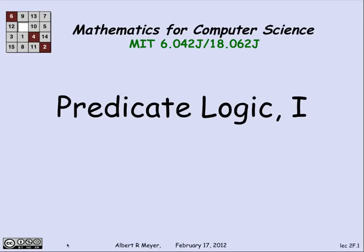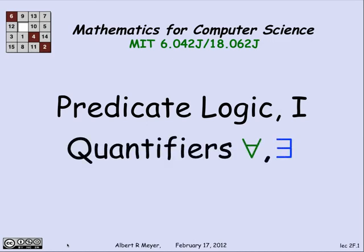The logic of predicates is a basic concept in mathematical language, as well as being a topic on its own. In particular, I'm going to talk now about the idea of the two so-called quantifiers: for all, that's the upside down A, and exists, that's the backward E.